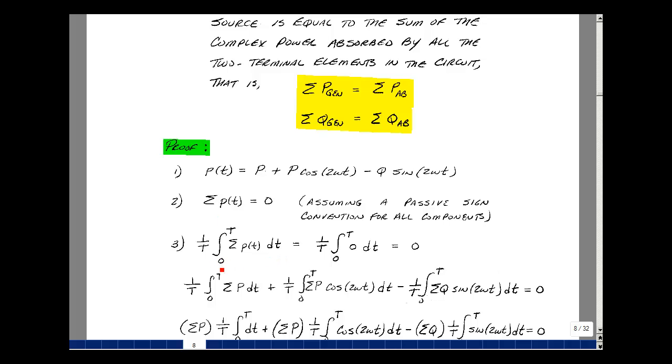dt, from zero to t, where t is the period of our source, and then divide by the period. What is P of t? Well, it's capital P plus capital P times cosine 2 omega t, and then minus Q times the sine of 2 omega t. We're just going to add those up over the number of elements that we have, including the sources.